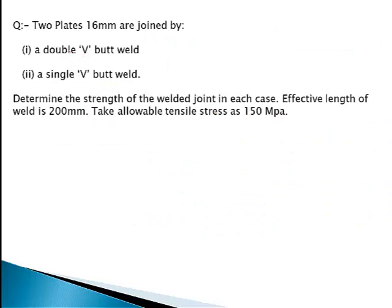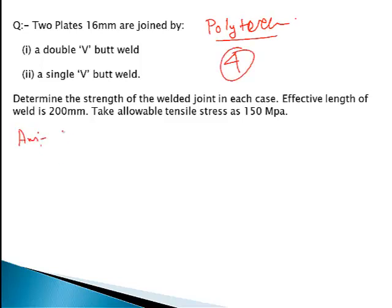Let's try a numerical. It is given: two plates of 16 mm are joined — case 1 by a double V butt weld, and case 2 by a single V butt weld. Determine the strength of the welded joint in each case. Effective length is given. This is a polytechnic examination question worth 4 marks.